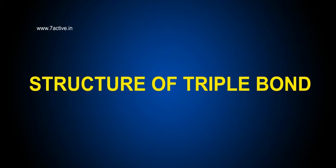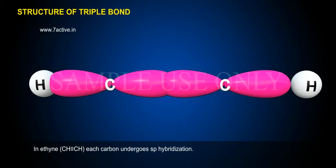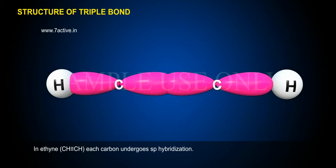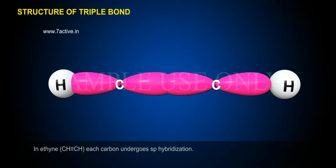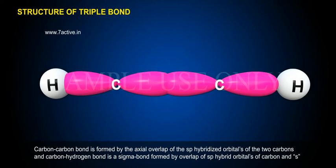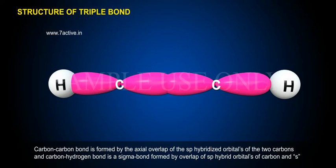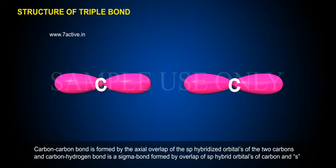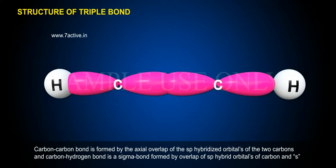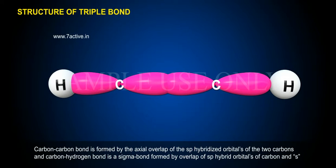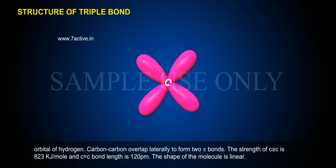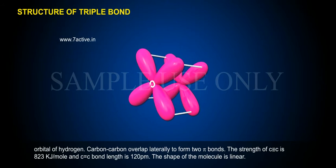Structure of triple bond: In ethyne, CH triple bond CH, each carbon undergoes SP hybridization. The carbon-carbon bond is formed by axial overlap of the SP hybridized orbitals of the two carbons, and the carbon-hydrogen bond is a sigma bond formed by overlap of the SP hybrid orbital of carbon and the S orbital of hydrogen.